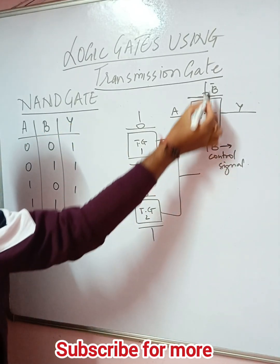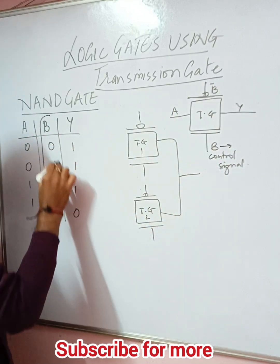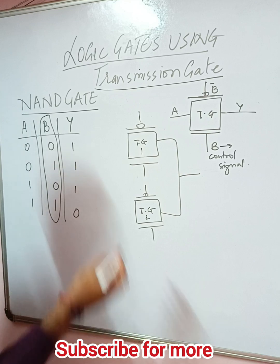Now you can see that we are assuming one of the inputs as control signal. We are assuming it to be B. You can assume it to be A also - it depends upon your choice.